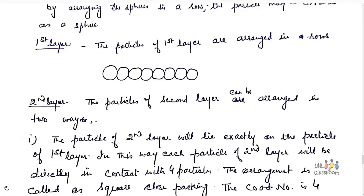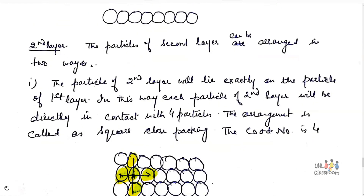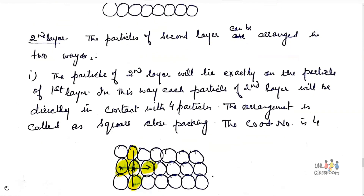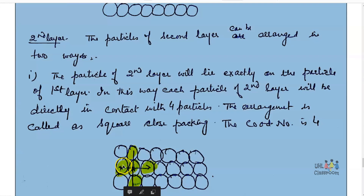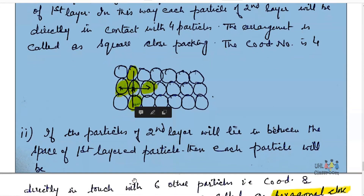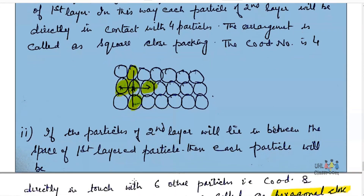The second layer can be arranged in two different ways. One is that the particles of the second layer will lie exactly on the particles of the first layer. In this way, each particle is in contact with four other particles, and the arrangement is called square close packing.